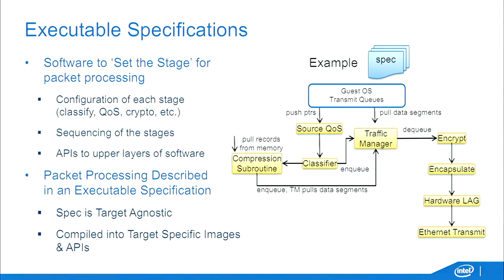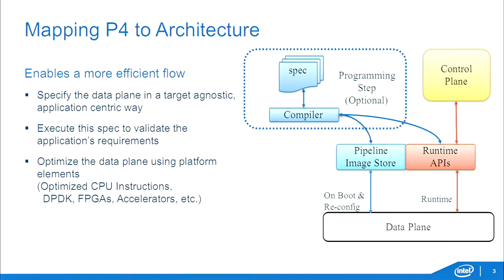But how do you get from something that's totally agnostic to something you can actually run and implement? That's where the mapping comes in. You specify the data plane in an application-centric way: my application needs to do this lookup, hold this packet, do this segmentation. It may have certain special blocks where it has to do some arbitrary computation — things like external C functions in P4 are really useful. Then you need to be able to run that before you give it to someone to optimize.